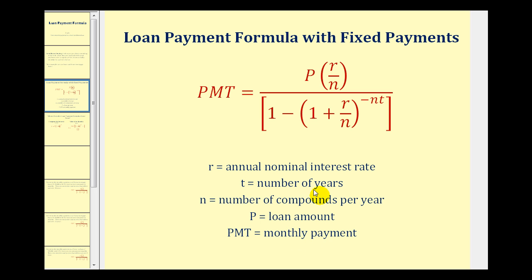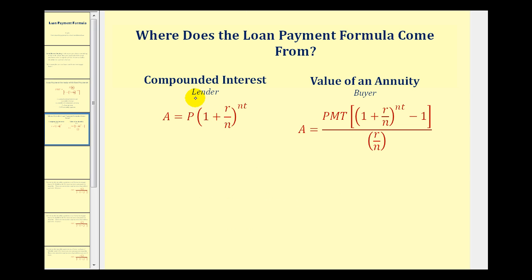Let's take a look at where this formula comes from. It comes from the compounded interest formula and the value of an annuity formula. If you're the bank or the lender, you would use the compounded interest formula to determine the return on your investment.